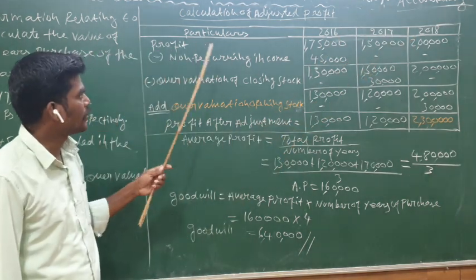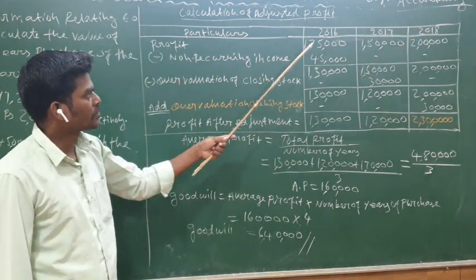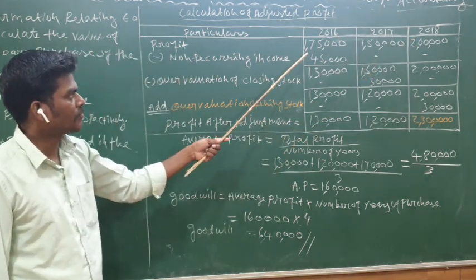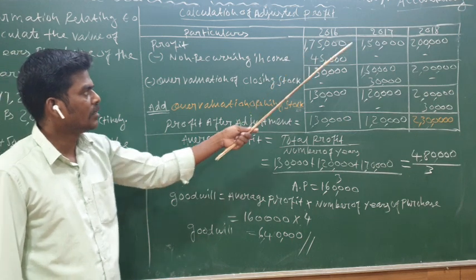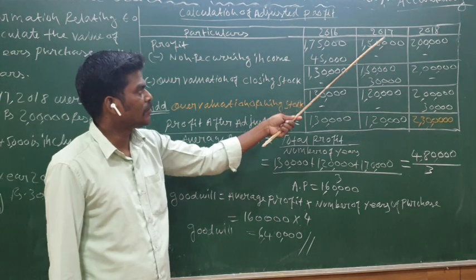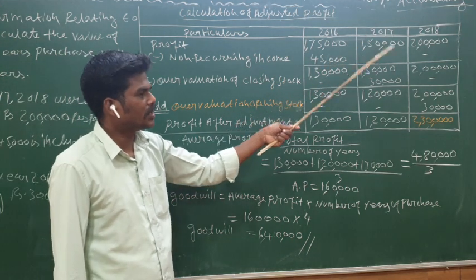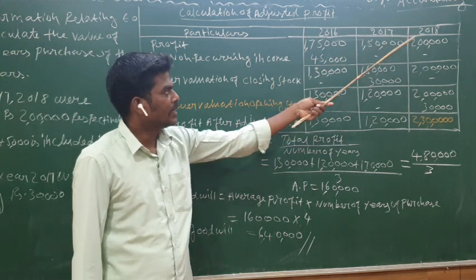The profit for 2016 is adjusted by deducting the non-recurring income. The overvaluation of closing stock in 2017 further reduces that year's profit by Rs. 30,000. These adjustments give us the corrected profit figures for each year.